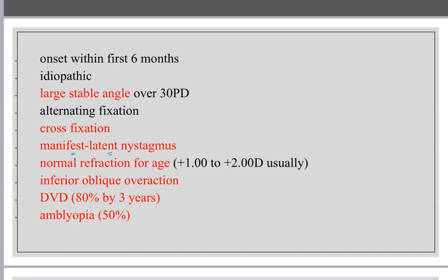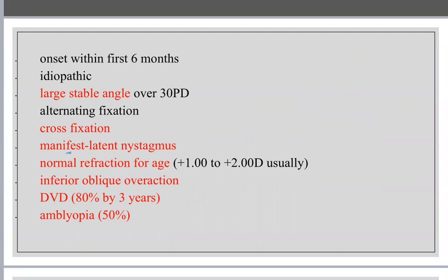Manifest latent nystagmus: I have nystagmus which is not evident at baseline because binocularity dampens it. If you cover one eye and disrupt binocularity, the nystagmus becomes more evident. The direction of the fast phase is towards the fixating uncovered eye. It may be manifest with low frequency and low amplitude, but becomes more aggressive when one eye is covered.